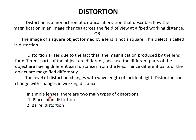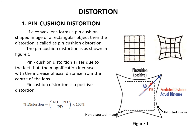For simple lenses, distortion is classified into two types: one is pincushion distortion and the other is barrel distortion. Coming to pincushion distortion — if a convex lens forms a pincushion shaped image of a rectangular object, then the distortion is called pincushion distortion.